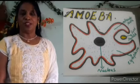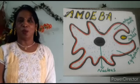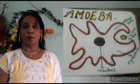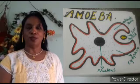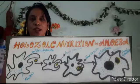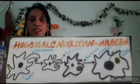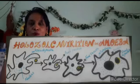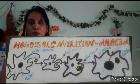Amoeba captures its food with the help of finger-like projections called pseudopodia. These pseudopodia protrude around the food particles and engulf them. This process is called phagocytosis — the finger-like projections called pseudopodia fuse around the food particles and form a food vacuole.